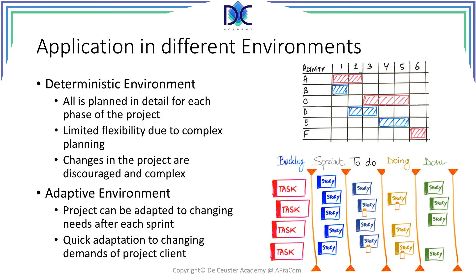But what happens if the sprints become longer and longer? We get back to a deterministic environment. On the other hand, when we have a deterministic environment with a very short planning horizon, we come back to the idea of sprints. This is the end of this session — we applied the concept of progressive elaboration, looked at the rolling wave concept, and determined how these concepts are used in deterministic and adaptive environments. See you at the next session, have a nice day.